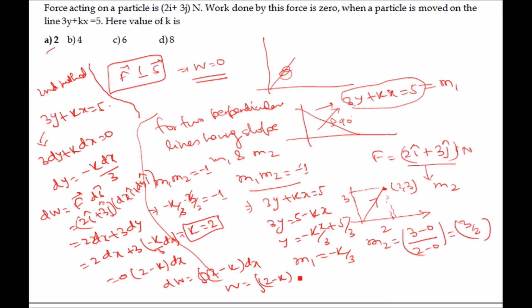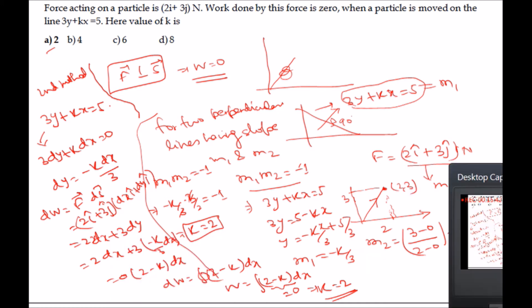Integrating, W = ∫(2 − k)dx. For work done to be zero, the term (2 − k) must equal zero, which gives k = 2. Both methods yield the same answer. You can use whichever approach suits you — either the slope-product condition or direct work calculation.